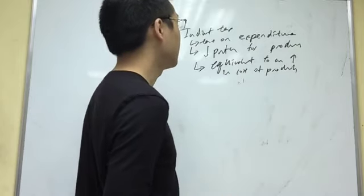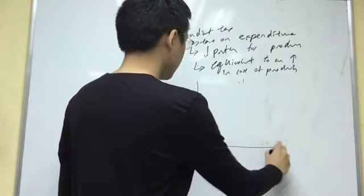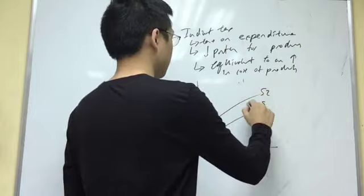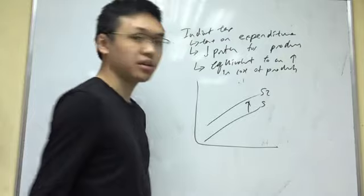So in terms of diagram, what you need to know, because when there's an increase in cost of production, the supply curve shifts upwards, right? So that is it. Because of the higher cost of production, it shifts up.